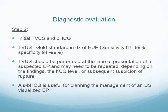The initial transvaginal scan and beta-hCG must be done at the time of presentation. The scan is done if there is a suspected ectopic pregnancy and may be repeated depending on the findings, the progress of the patient, the beta-hCG levels, and subsequent suspicion of rupture. Serum beta-hCG is useful for planning management as mentioned.